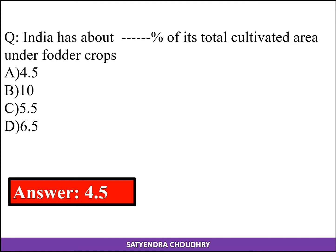India has about 4.5 million hectares of its total cultivated area under fodder crops.